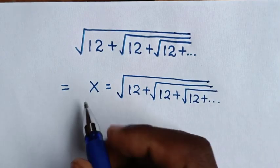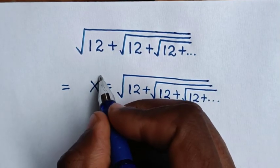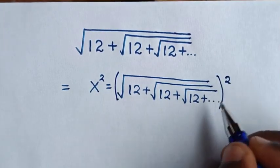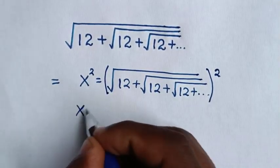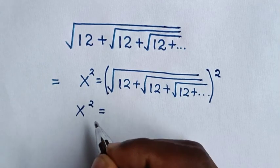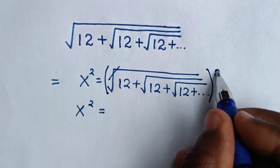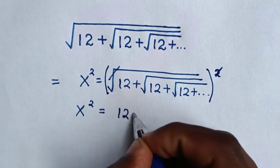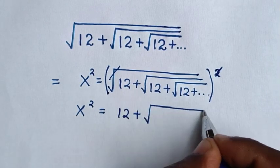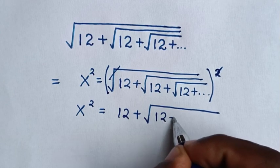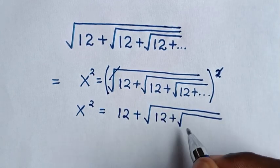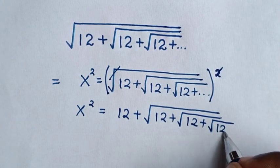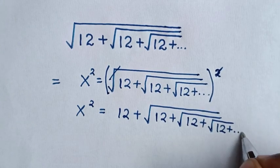In the next step, we will square on both sides — we square on this side and on this side. So it will be x squared is equal to: this square root will cancel with this square, so it will be 12 plus square root of 12 plus square root of 12 plus square root of 12, plus up to infinity.